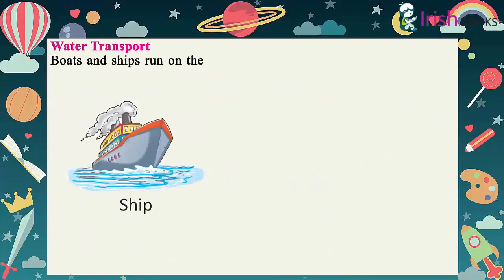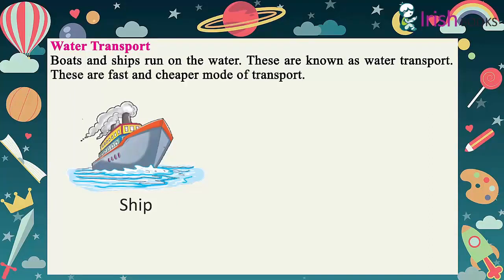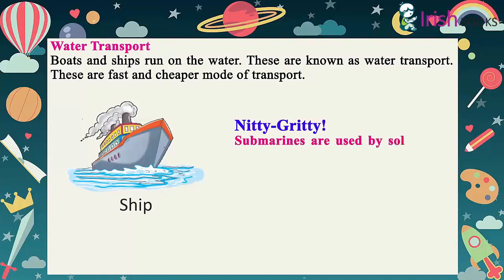Water Transport: Boats and ships run on the water. These are known as water transport. These are a fast and cheaper mode of transport. Submarines are used by soldiers to travel underwater.